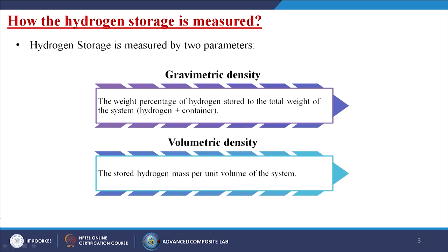Gravimetric density is the weight percent of hydrogen stored to the total weight of the system — that is, hydrogen plus container. Volumetric density is the stored hydrogen mass per unit volume of the system. So one is measured by weight and the other is by volume — that is the basic difference between the two.